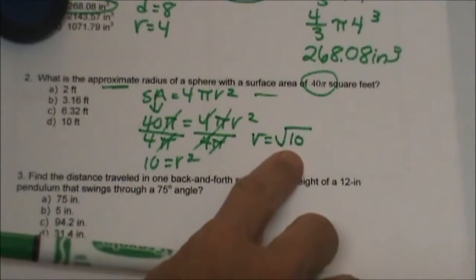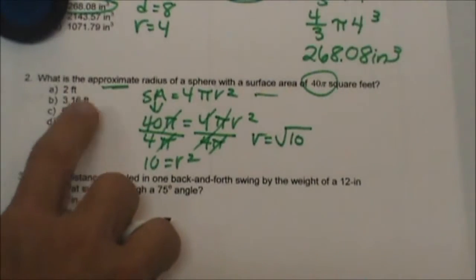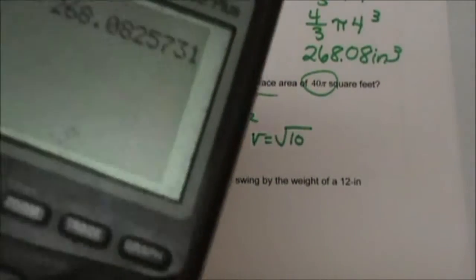That is what they are asking for. Don't be tricked. One of the distractor answers is 10. We know that is not the answer.